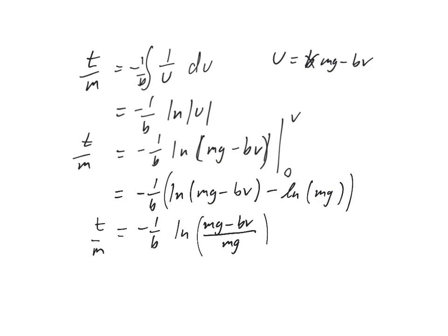If you've got time at the end of the test, come back and do the algebra. Okay? We're going to finish with the algebra, which means we need to solve for v. So, getting the negative 1 over b to the other side, we have negative tb over m. And that's equal to natural log of, let's go ahead and divide those, simplify it, 1 minus bv over mg.